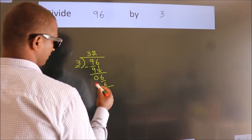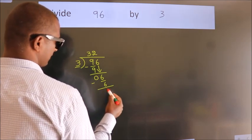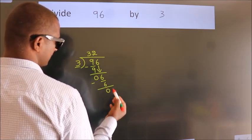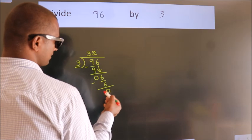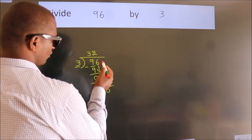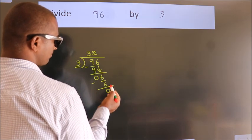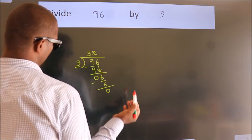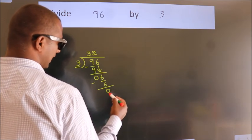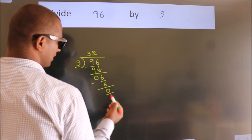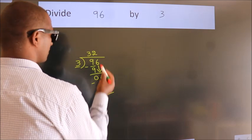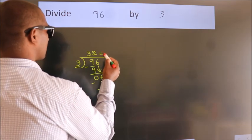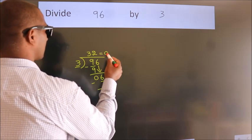Now we subtract. We get 0. After this, no more numbers to bring it down. We got remainder 0. So this is our quotient.